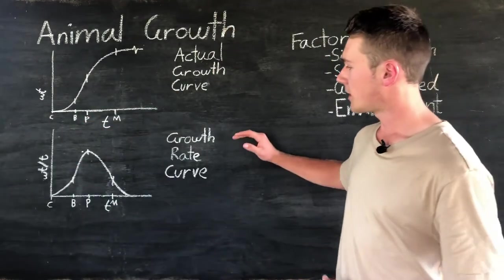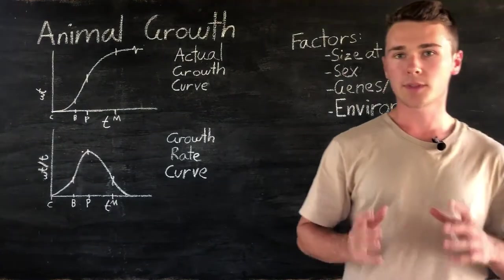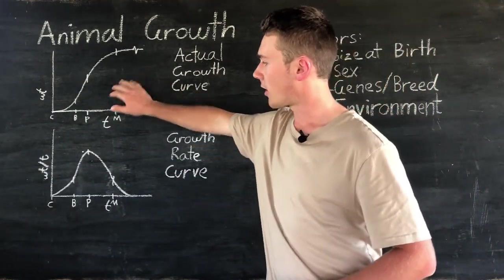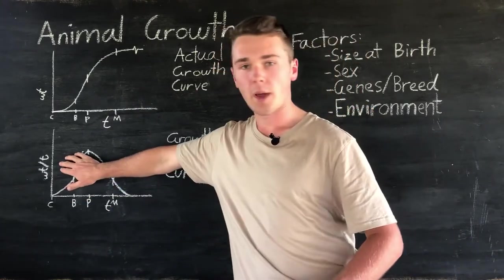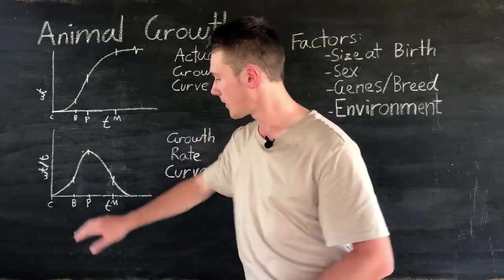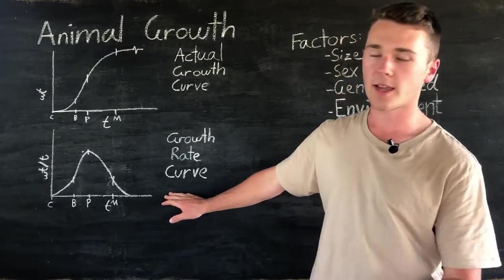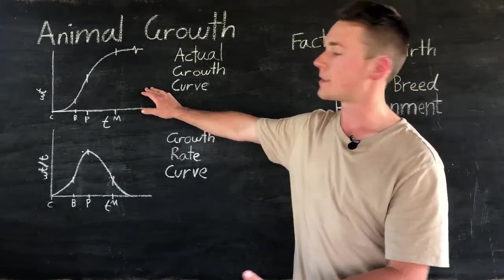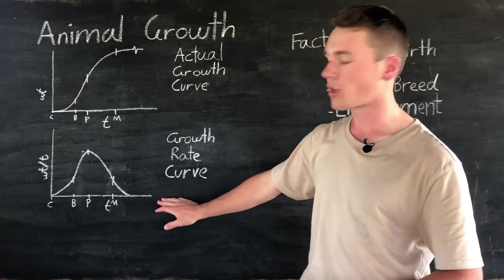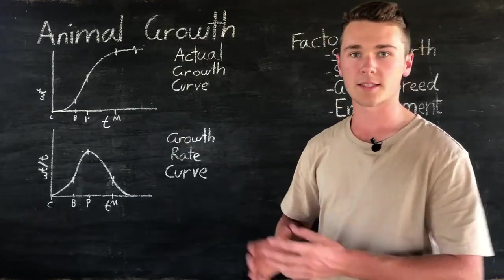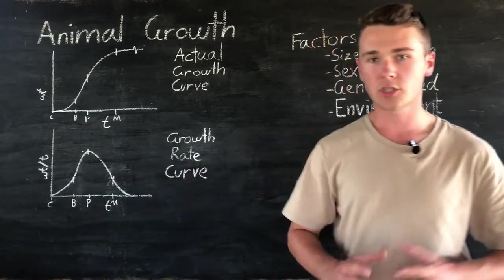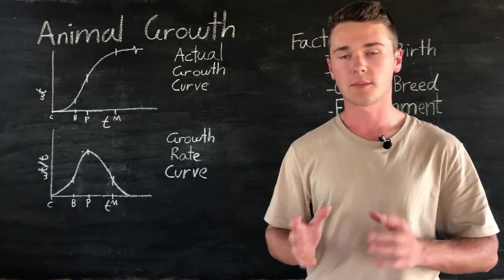The graph below this is called our growth rate graph. Now what this shows is the rate of the change in our weight over time. So it's weight per unit of time per unit of time. This shows the amount of weight that it's gaining at a particular time. So this is a graph that we can actually use to determine when's the best time to sell.